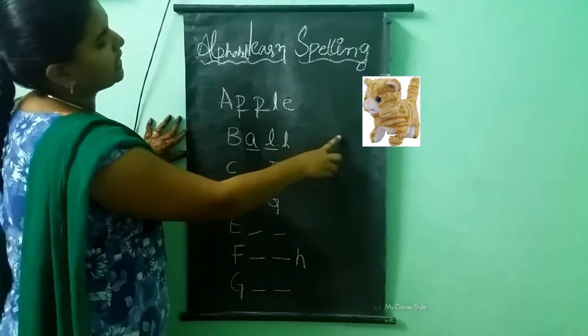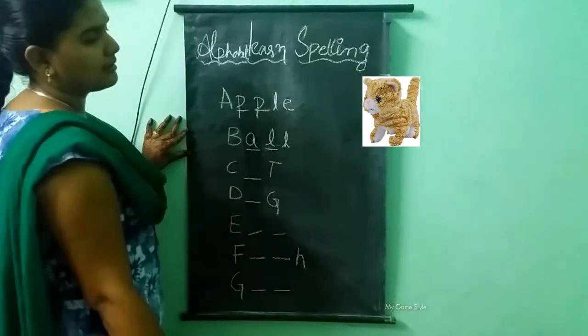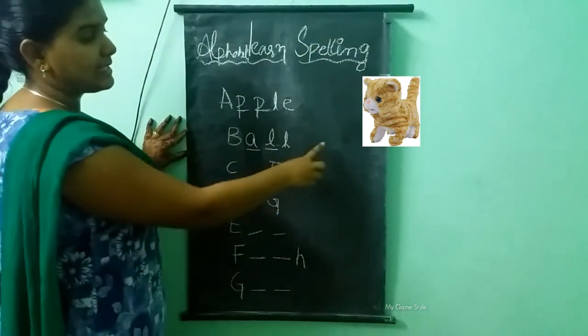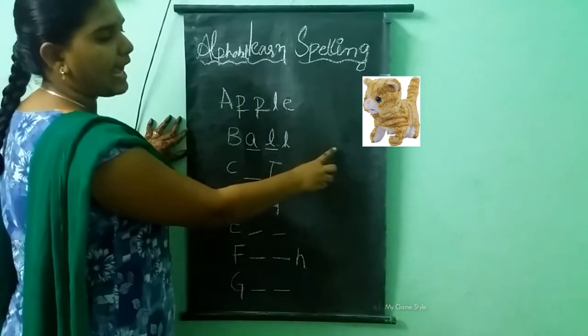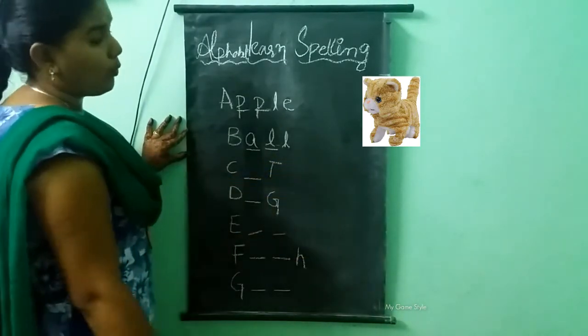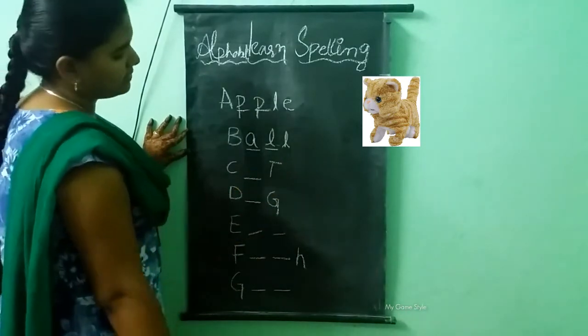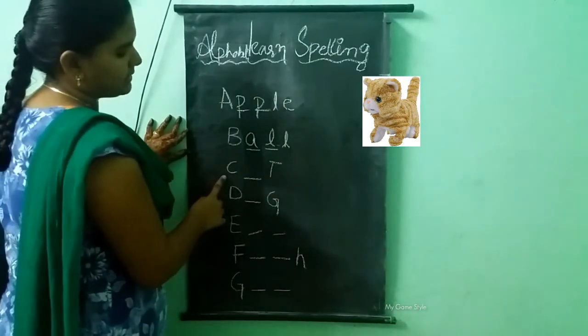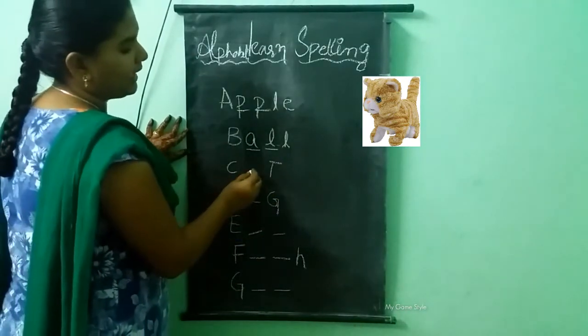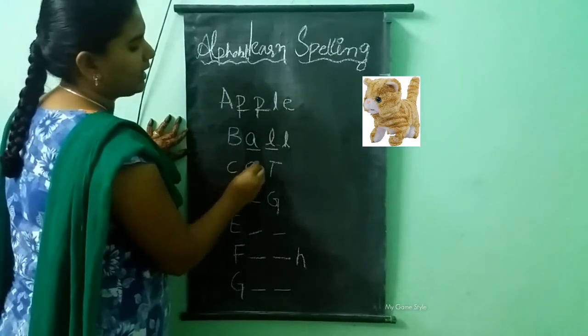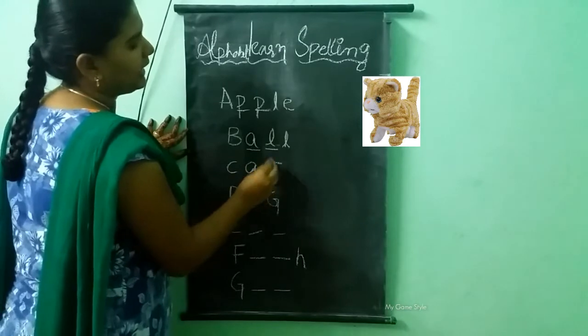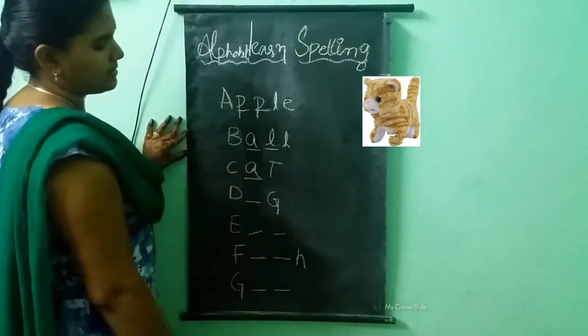What picture is this? This is a cat. What is the spelling of cat? C-A-T. Cat.